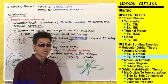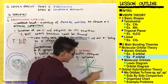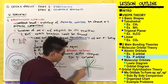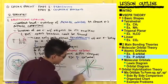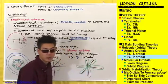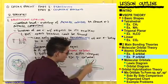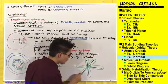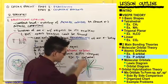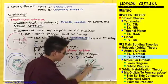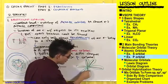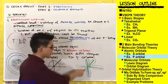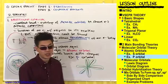Depending on which lobe an electron is in — whether it's in this lobe, or this lobe, or the lobe going front to back — an electron can be anywhere within those lobes. If it's in the one going top to bottom, an electron can be anywhere within that P orbital.